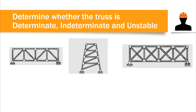Let's solve the first example. We are asked to determine whether the truss is determinate, indeterminate, or unstable. Counting the number of members: we have 17 members.